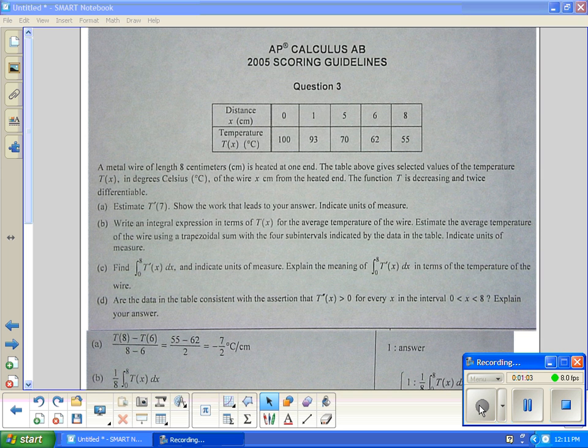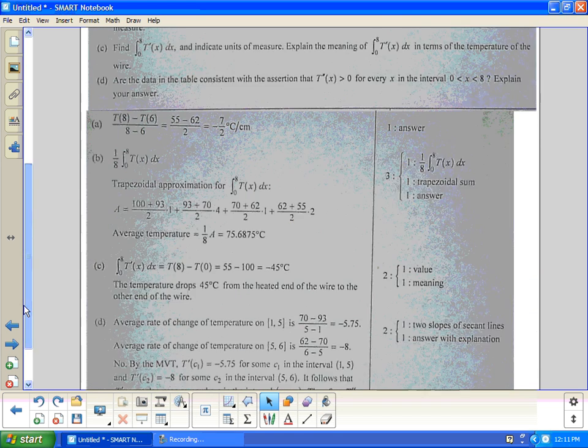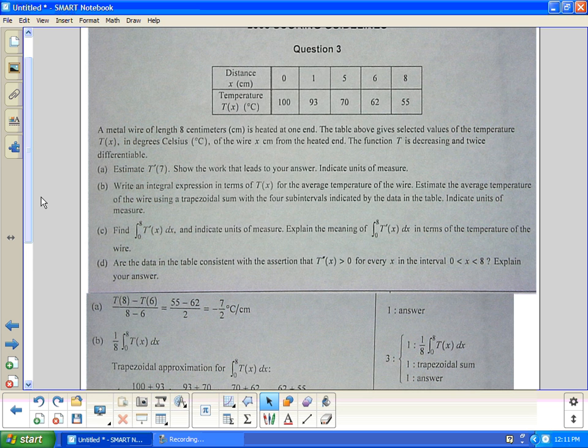Again, units are critical. Point for the answer. My guess is as we go down the page, units are going to be worth a point to get all three. So right now you don't get a third of a point, you've got to get them all. So here you've got to have units. If you've missed units, you've got to hold for one. If you've got these so far, so good.